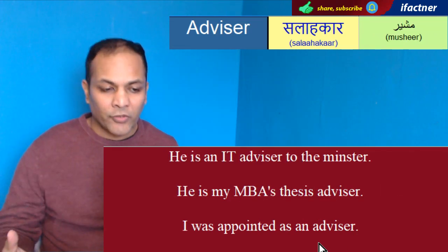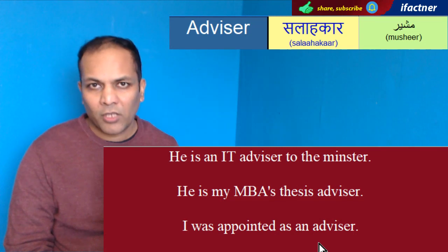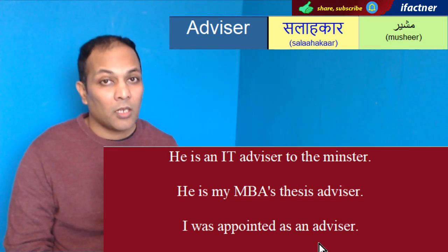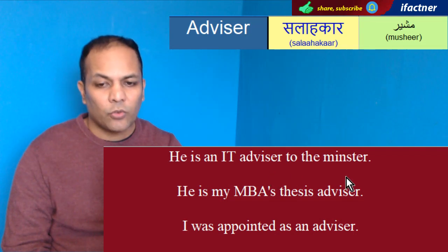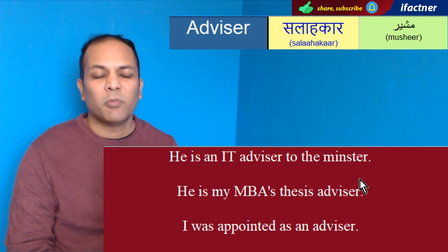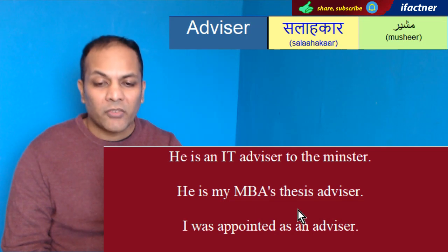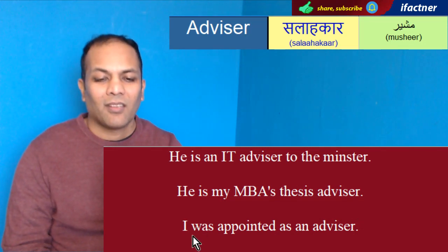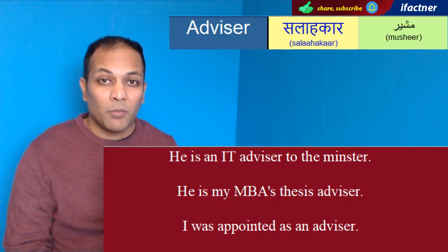Ab dekhain 'advise' say hi nikla hai 'advisor'. Advisor ki spelling A-D-V-I-S-E-R bhi ho sakti hai aur American English mein A-D-V-I-S-O-R bhi ho sakti hai. Advise kernay waalay ko, yaani ki mashwara daynay waalay ko, hum kehtay hain advisor — salahkaar, ya phir musheer. 'He is an IT advisor to the minister.' — Woh wazir ka IT masheer hai. 'He is my MBA thesis advisor.' — Woh meray MBA thesis ke advisor hain. 'I was appointed as an advisor.' — Mujhay advisor ke tor par appointment mili.